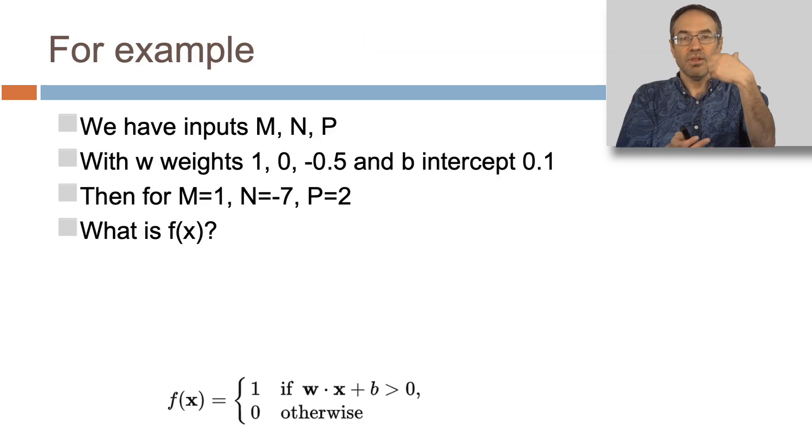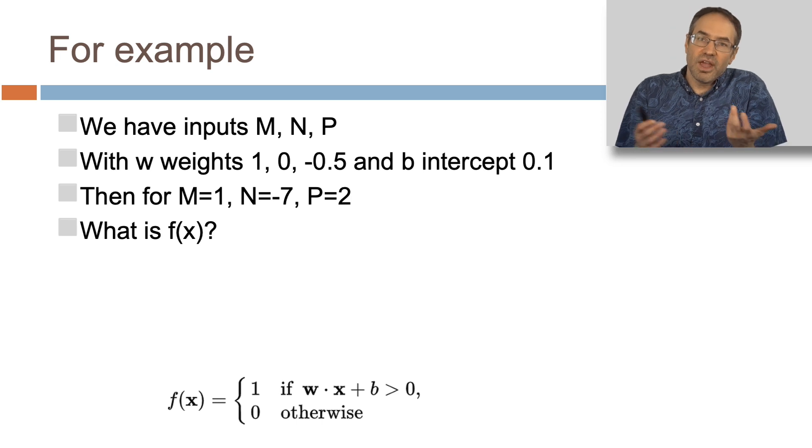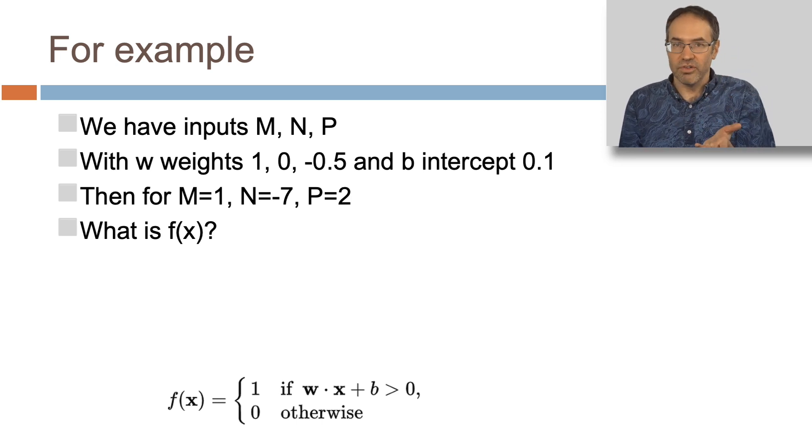For example, we have inputs M, N, P with weights 1, 0, -0.5 and b intercept 0.1. Then for M=1, N=0.003, P=8. So we can take any set of values of M, N, and P, let's say 1, 7, and 2, and we can calculate f(x).